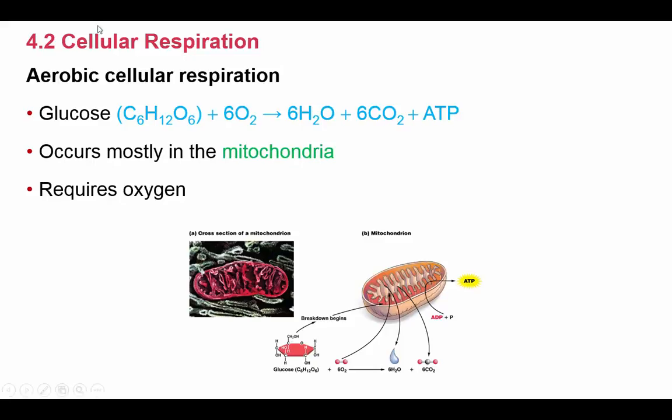The most common food energy source discussed is the sugar glucose. In aerobic cellular respiration, cells take glucose (C6H12O6) and oxygen (O2), and by using those materials, cellular respiration produces three products: water, carbon dioxide which we exhale, and ATP.